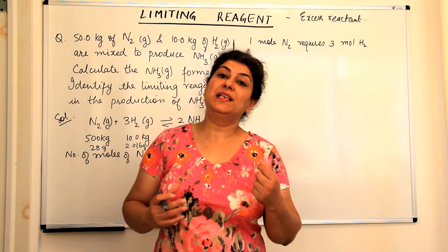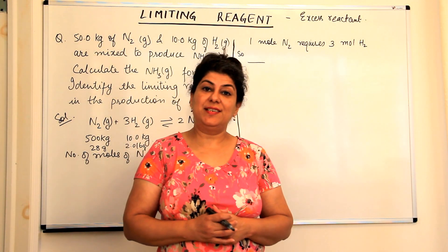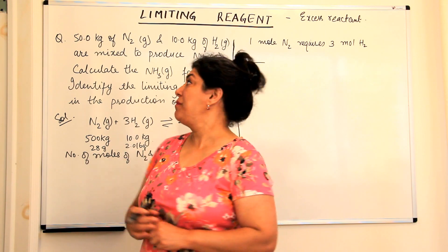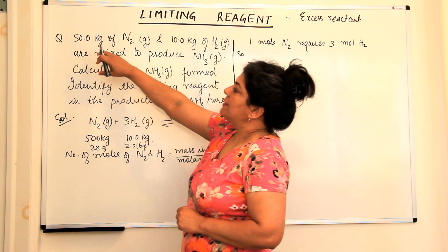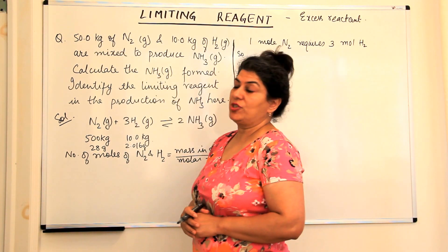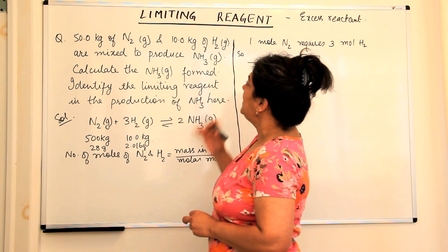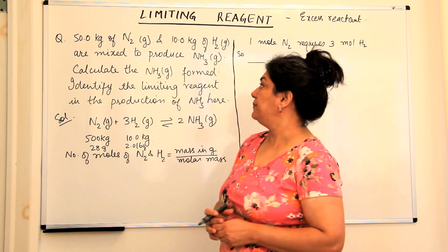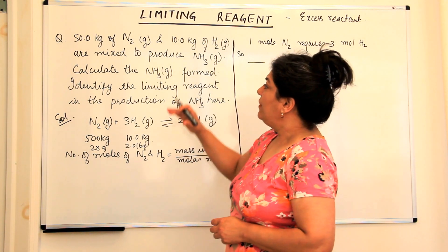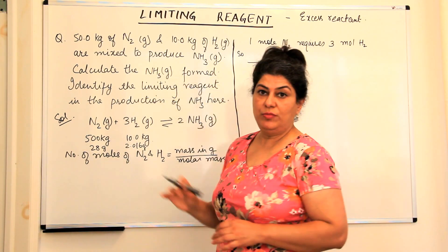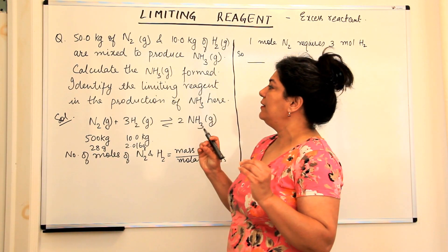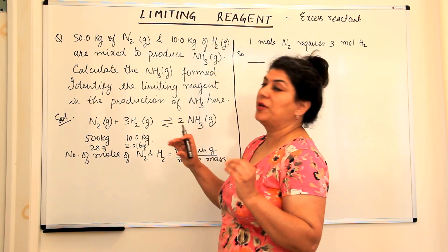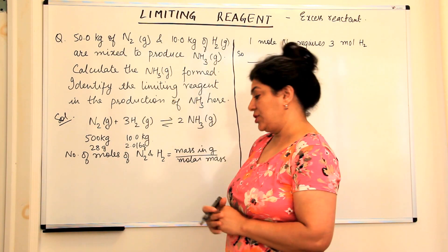Now that we know what a limiting reagent is, let's try and solve this numerical problem. The question is that we have 50 kg of nitrogen and 10 kg of hydrogen. These are mixed together to produce ammonia. We need to calculate the ammonia formed and identify the limiting reagent, if any, in the production of ammonia in this reaction.